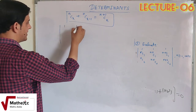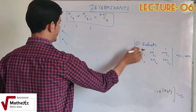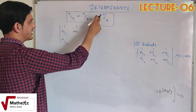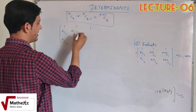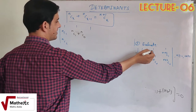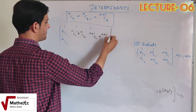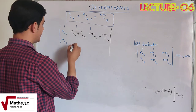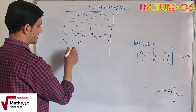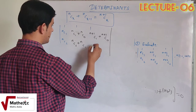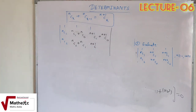Determinant में terms हैं: Row 1: [1, nC1, nC2], Row 2: [1, n+1C1, n+1C2], Row 3: [1, n+2C1, n+2C2]. Formula लगाते हैं: n+1C1 = nC1 + nC0, n+1C2 = nC2 + nC1, n+2C2 = n+1C2 + n+1C1. सारे formula एक साथ लगाने पर थोड़ा confusion हो सकता है, इसलिए एक एक करके apply करते हैं।